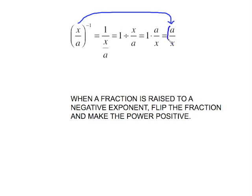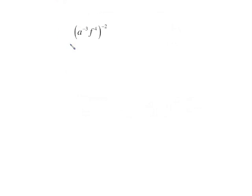The x over a raised to the negative 1 took our fraction and just flipped it over. Now technically to be able to use this expression down here, I would need to think about this in parentheses raised to the positive 1. So this is how we're going to deal with a negative exponent on a fraction. When a fraction is raised to a negative exponent, just flip the fraction and make the power positive.